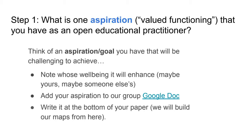An aspiration in everyday terminology is what we would call a 'valued functioning' in the capability approach — it relates to well-being. We're asking you to think of an aspiration or goal that will be challenging to achieve in relation to open education. When you think of it, also consider whose well-being it will enhance — it could be yours, or someone else's. We've created a Google doc you can use to share your aspirations with one another.